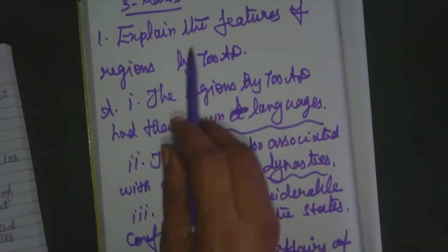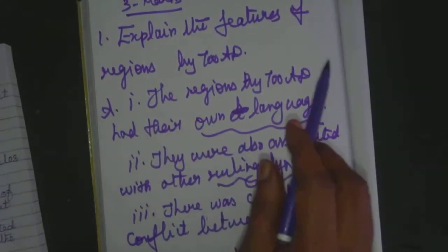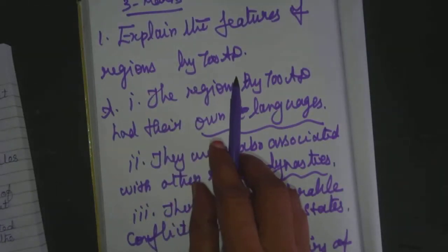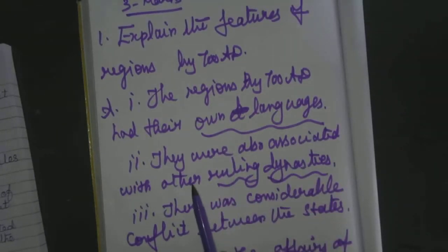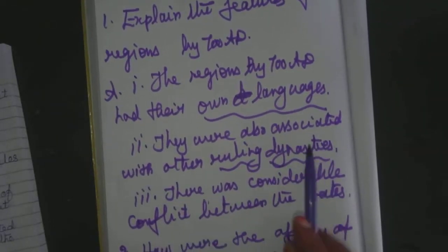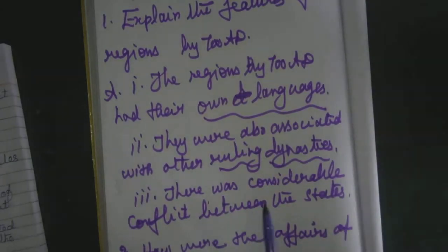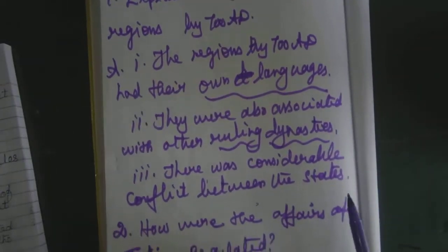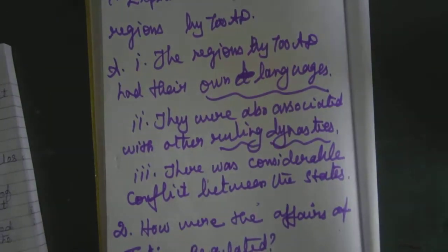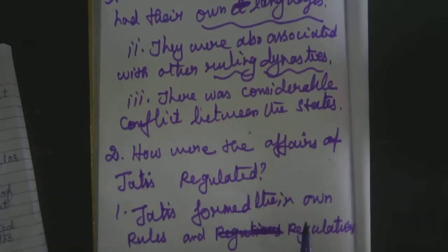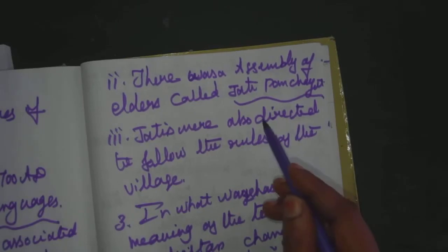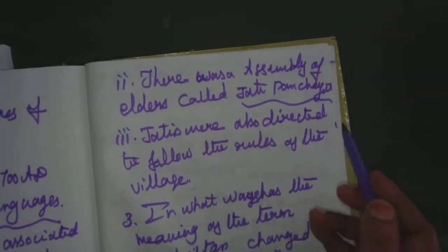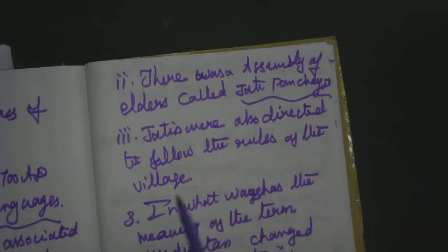I am going to read out the three marks again. Explain the features of regions by 780. The regions by 780 had their own languages. They were also associated with other ruling dynasties. There was considerable conflict between the states. However, the efforts of the Chathis regulated things. Chathis formed their own rules and regulations. There was an assembly of elders called Chadi Panchayat. Chathis were also directed to follow the rules of the village.